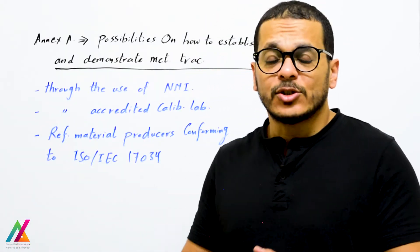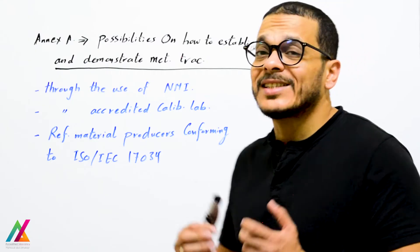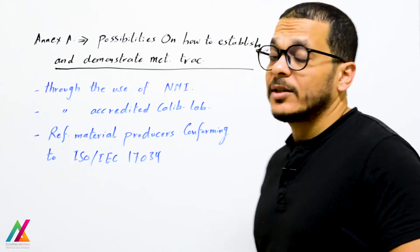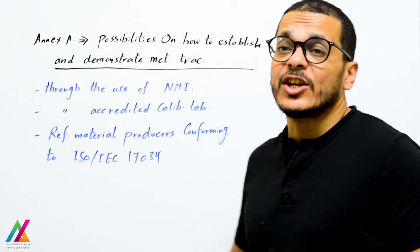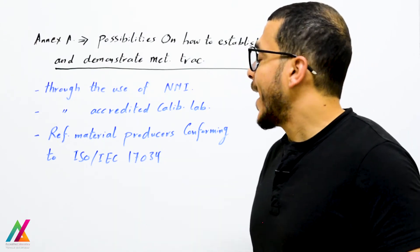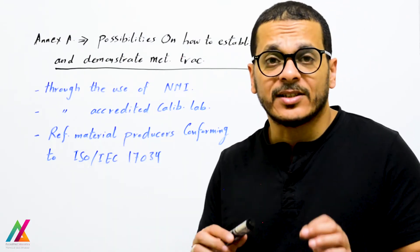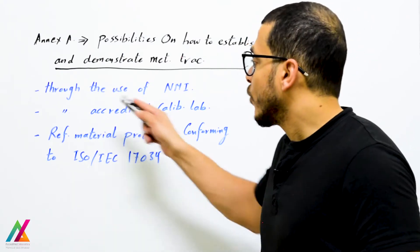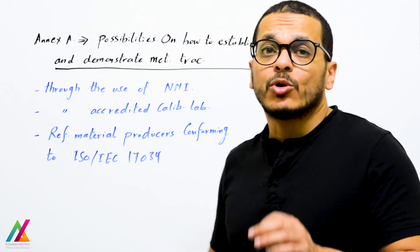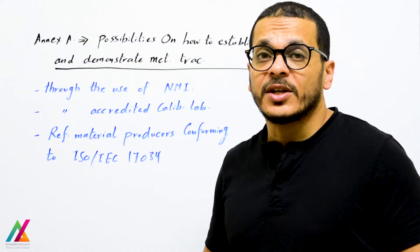In Annex A of this document you will find possibilities on how to establish and demonstrate metrological traceability — through the use of the national metrological institute and through an accredited calibration lab. Also, certified reference materials (CRM) from reference material producers shall conform to ISO/IEC 17034.